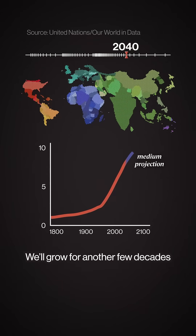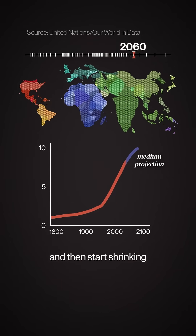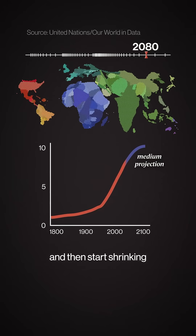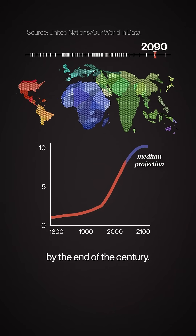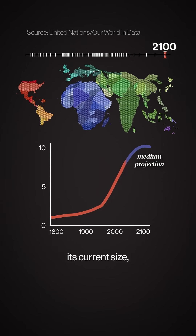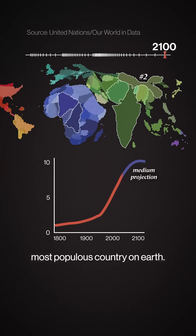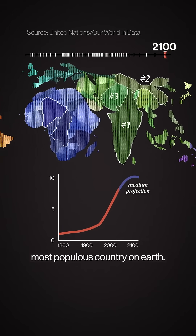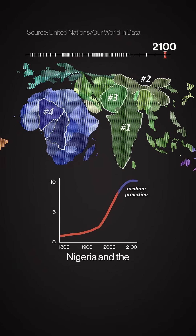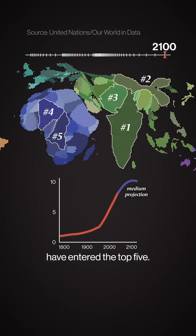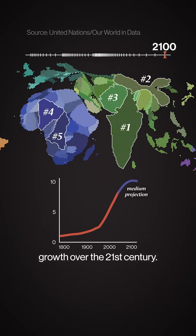We'll grow for another few decades and then start shrinking. By the end of the century, China is less than half its current size, but still the second most populous country on earth. Nigeria and the Democratic Republic of Congo have entered the top five, a sign of Africa's growth over the 21st century.